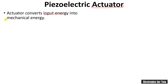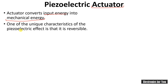Now, exactly opposite to the piezoelectric transducer is the piezoelectric actuator. An actuator converts input energy into mechanical energy. It is exactly opposite to an electrical transducer, which converts any energy into an electrical signal, whereas an actuator converts input energy into mechanical energy.